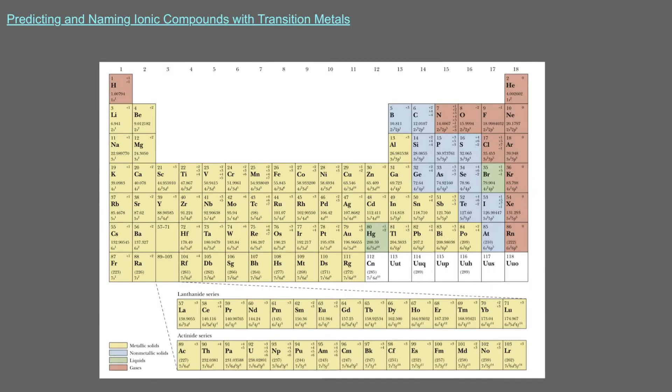But what about the rest of the metals in the periodic table? For the transition metals, located in this middle section of the periodic table, the elements can often make more than one cation, and that makes naming these compounds a little more difficult.